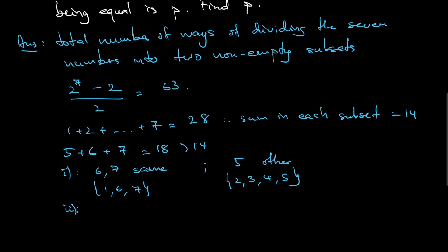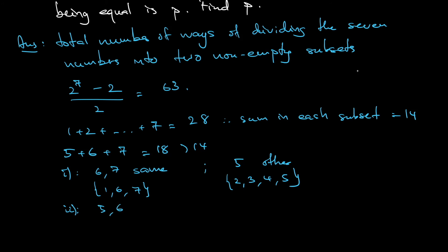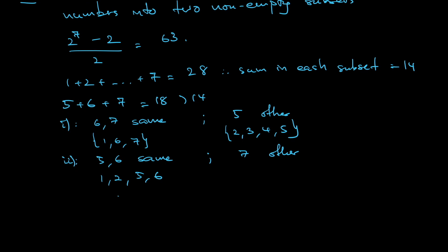Case 2: 5 and 6 are in the same subset, and 7 is in the other. 5 plus 6 is 11, and I need the sum to be 14, so I need an extra 3. That can be {1, 2} together, giving subset {1, 2, 5, 6} with the rest being {3, 4, 7}. Or just 3 alone, giving subset {3, 5, 6} with the rest being {1, 2, 4, 7}. So that's two valid arrangements.